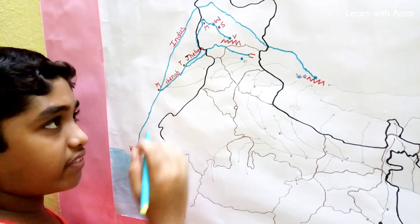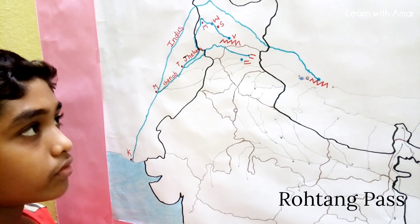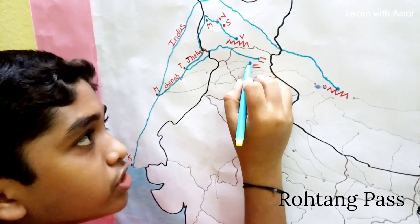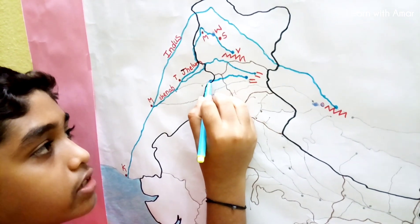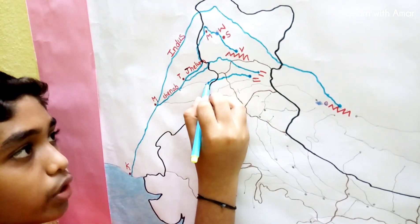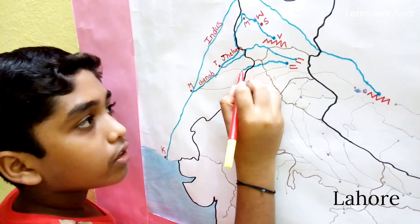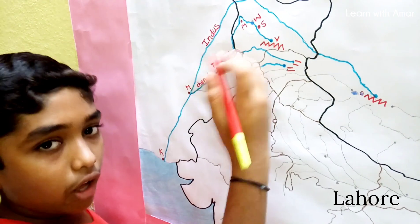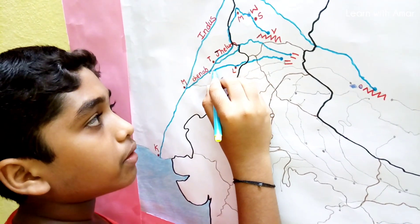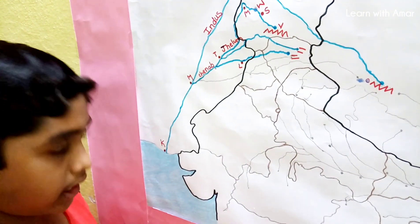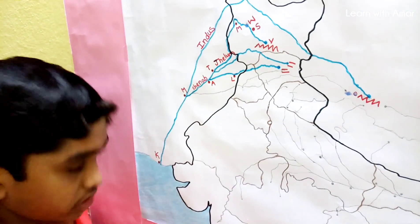The next river is Ravi. Its source is near Rohtang Pass in Himachal Pradesh. It flows through Himachal Pradesh and Punjab, then enters Pakistan. Lahore, one of the main cities of Pakistan, lies on the bank of this river. It then joins the Chenab at Ahmedpur Siyal.